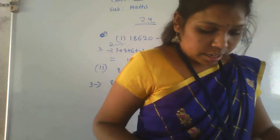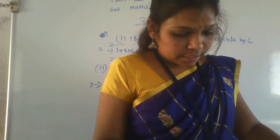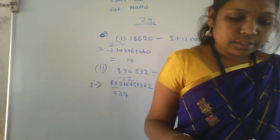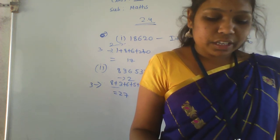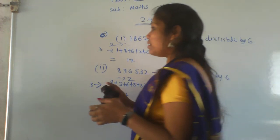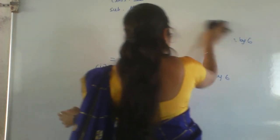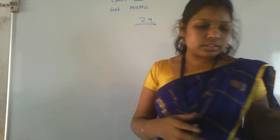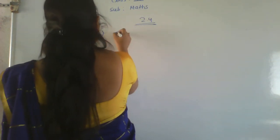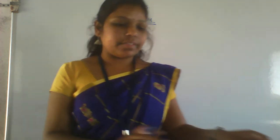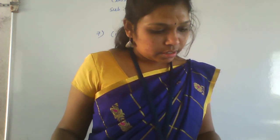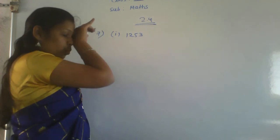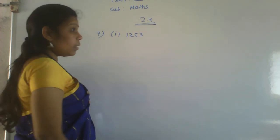Next, go for the seventh question: check the divisibility of the following numbers by 7. I already explained all divisibility rules in the last class, so please go through that video once again. First number is 1253.